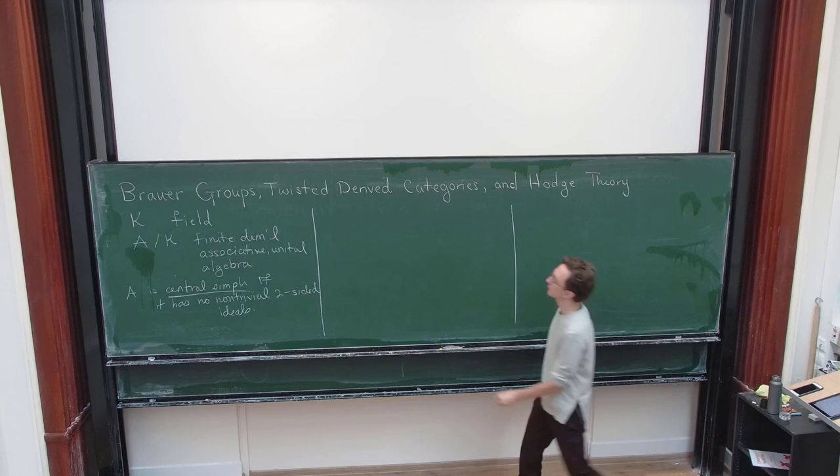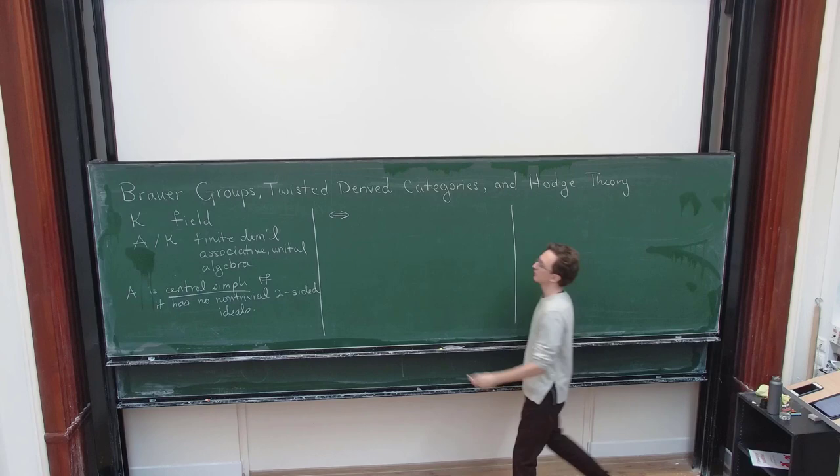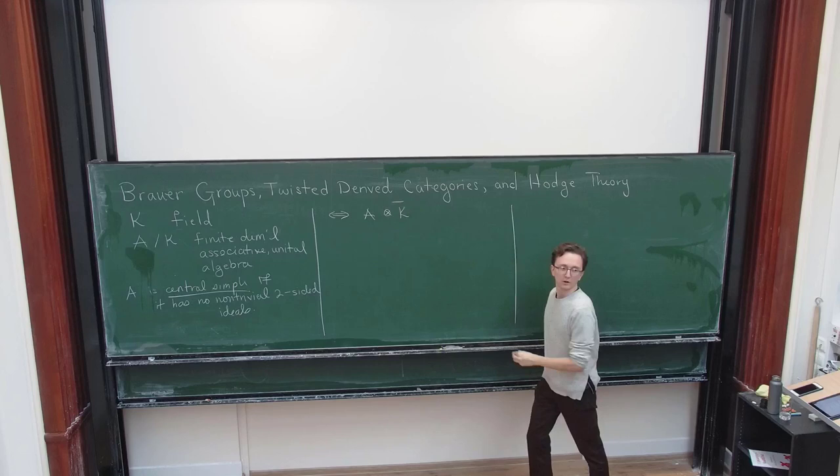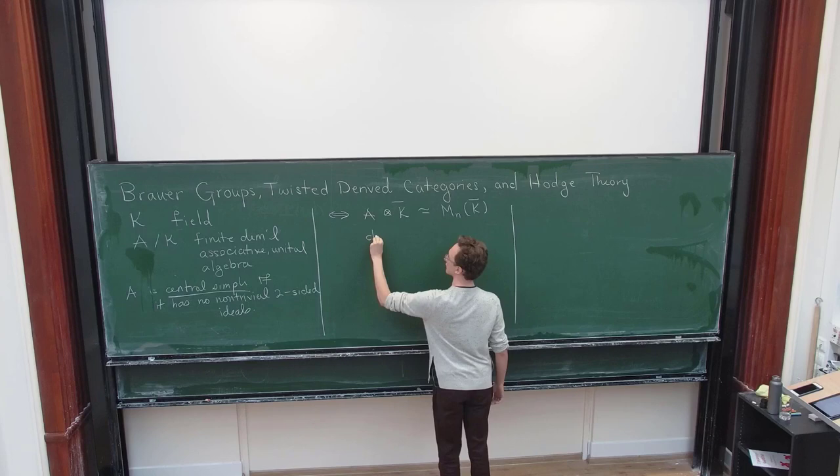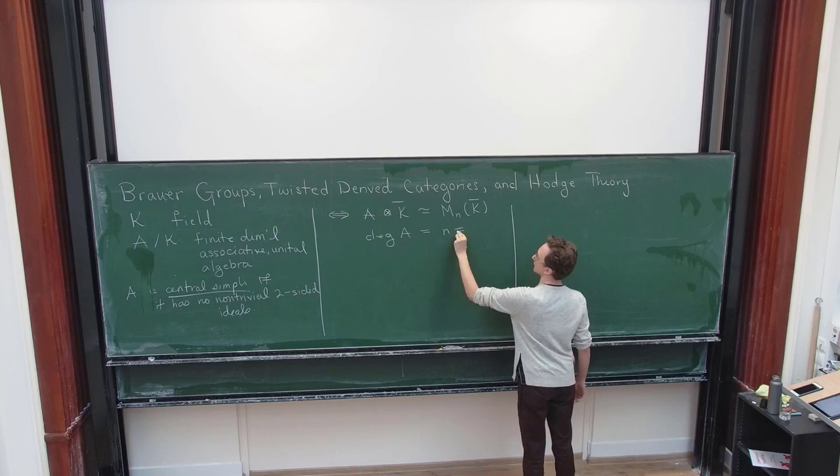So that's what it means to be central simple. And this is equivalent, probably the most concrete way to think about it is that if I take my algebra and I go up to an algebraic closure, what I get is a matrix algebra over the algebraic closure. So this is the simplest way to say it. And this integer n that I get is called the degree.